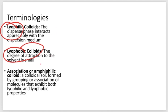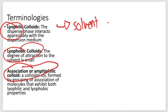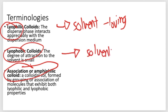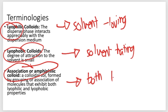A third type of colloidal sol is termed an association or amphiphilic colloid. It is formed by the grouping or association of molecules that exhibit both lyophilic and lyophobic properties. To summarize: lyophilic colloids are solvent-loving, lyophobic colloids are solvent-hating, and association or amphiphilic colloids possess properties of both.